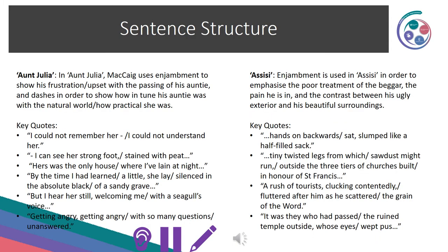We are now going to focus on the technique of sentence structure. In Aunt Julia, McCaig uses enjambment to show his frustration and upset with the passing of his auntie, and dashes to show how in tune his auntie was with the natural world and how practical she was. Key quotes: 'I could not understand her', 'I can see her strong foot stained with peat', 'Hers was the only house where I've lain at night', 'By the time I learned a little, she lay silenced in the absolute black of a sandy grave', 'But I hear her still, welcoming me with a seagull's voice', and 'getting angry, with so many questions unanswered.'